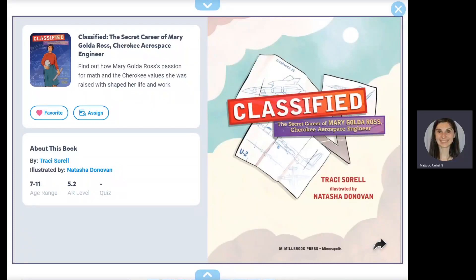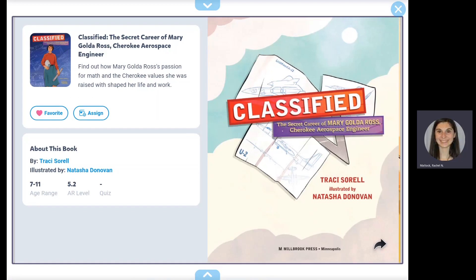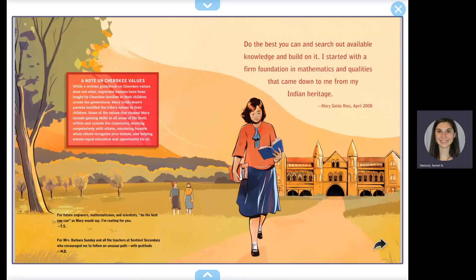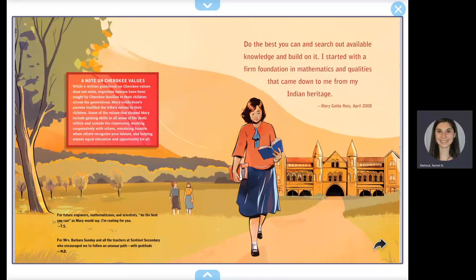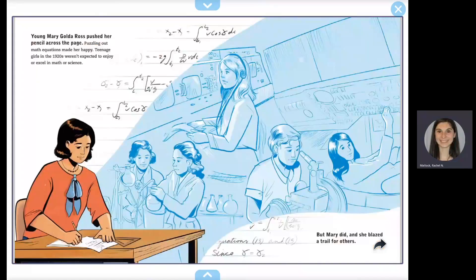Classified: The Secret Career of Mary Golda Ross, Cherokee Aerospace Engineer, written by Tracy Sorrell, illustrated by Natasha Donovan. "Do the best you can and search out available knowledge and build on it. I started with a firm foundation in mathematics and qualities that came down to me from my Indian heritage." Mary Golda Ross, April 2008.